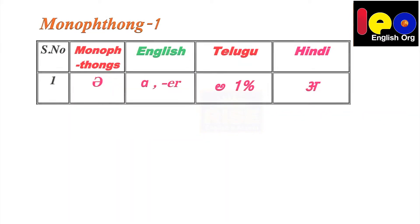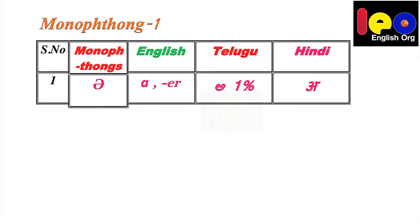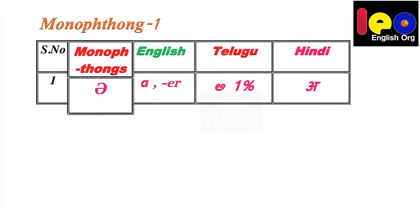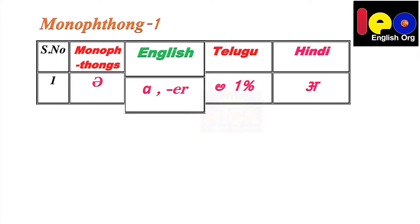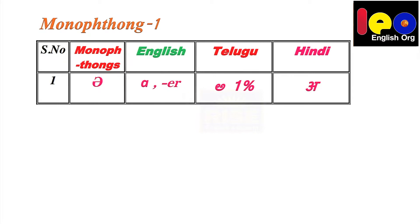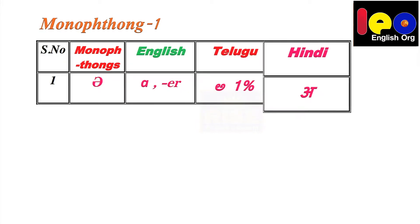Monophthong number 1. Here we can see a table. It is divided into 5 parts: first part, serial number; second, the monophthong symbol we are going to learn; third, English; fourth, Telugu; fifth, Hindi.